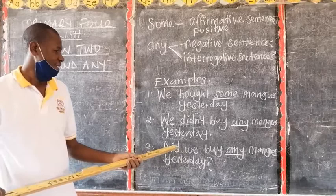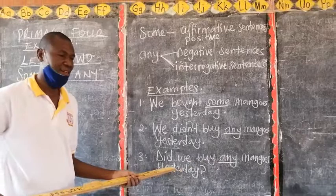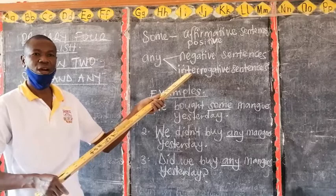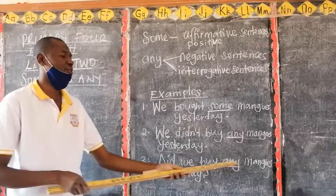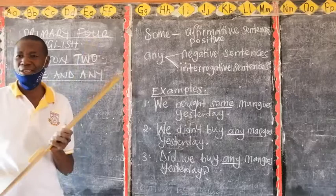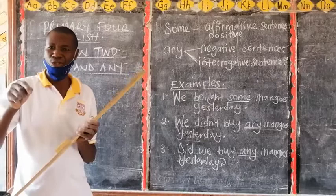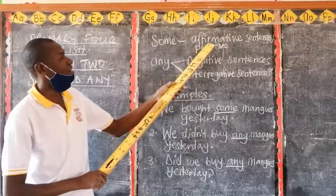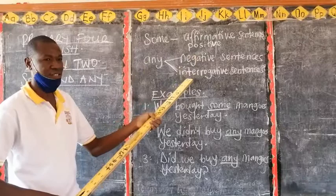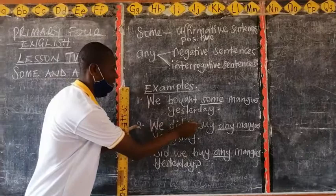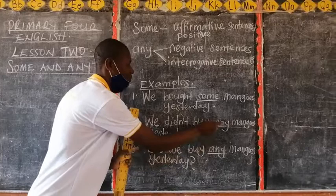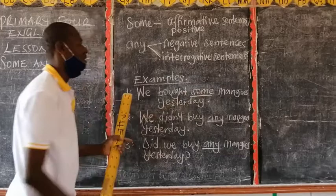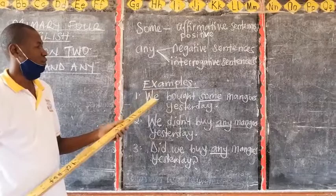Number three: Did we buy any mangoes yesterday? This is an interrogative sentence because it is asking a question. Grammatically, we cannot say did you buy some mangoes — using some in a question. For you to use some, the sentence must be affirmative. For you to use any, it must be either negative or interrogative. We didn't buy — negative. Did we buy any mangoes yesterday? — interrogative. While the sentence using some is affirmative. That is how we are supposed to use these two words, some and any.